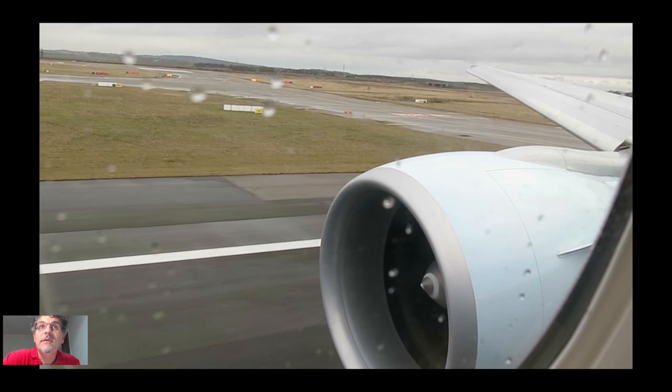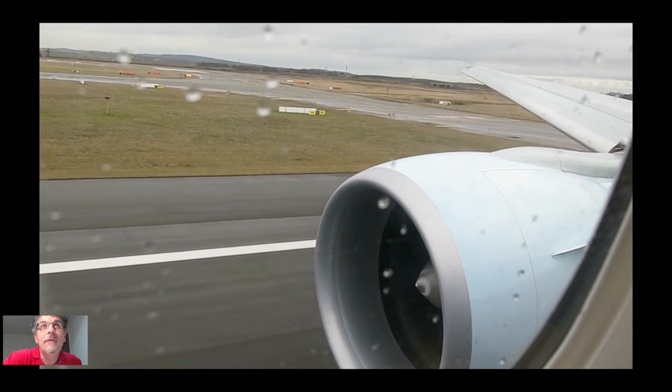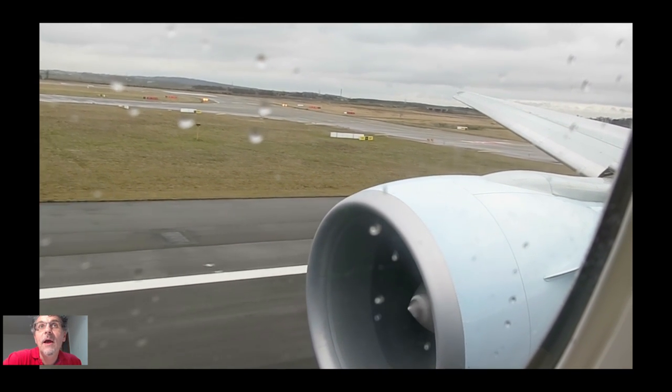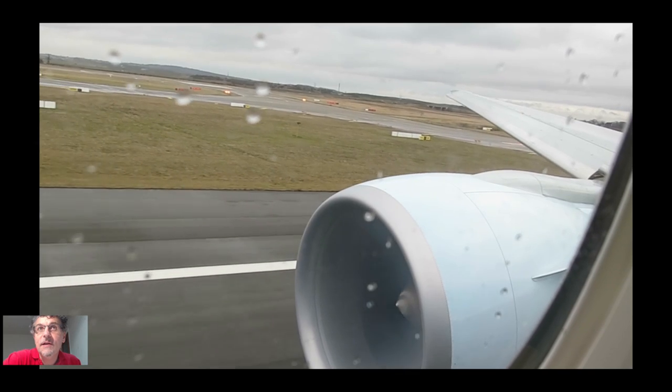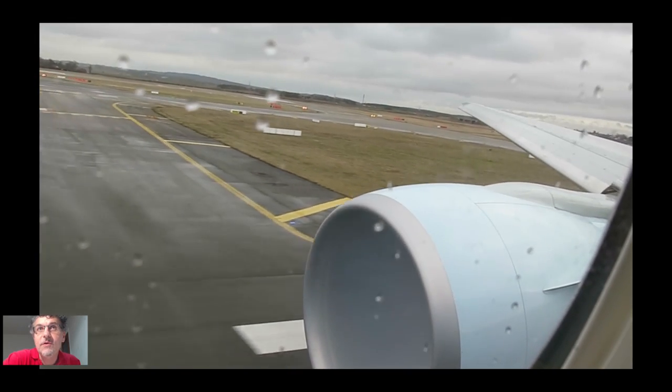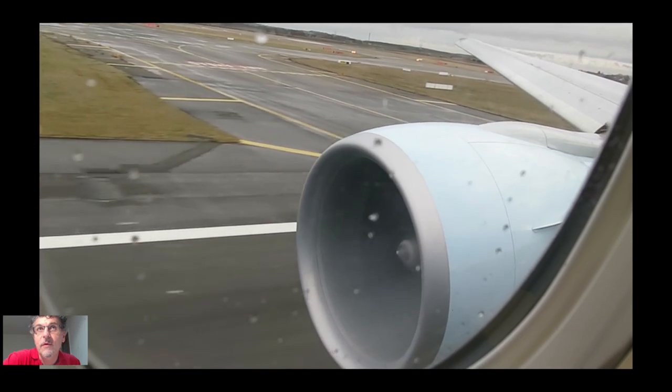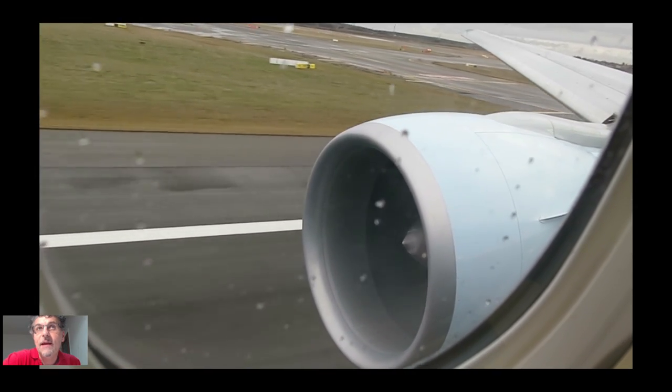As we go off the snow, the vortex disappears, although it's really still there. This is another 777 on takeoff from Paris Charles de Gaulle. Watch the inlet to the engine. You can see moisture because of the low pressure zone that is created on the inlet to the engine.